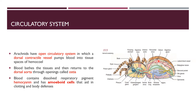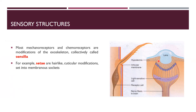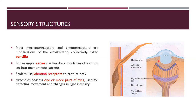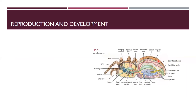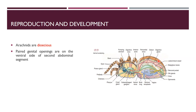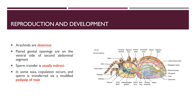Sensory structures in arachnids include chemoreceptors and mechanoreceptors, called sensilla collectively. There are setae — hair-like structures — and vibration receptors for capturing prey. One or more pairs of simple eyes are present for detecting light intensity. For reproduction, arachnids are dioecious with paired genital openings on the ventral side. Sperm transfer is indirect, and males have pedipalps modified for sperm transfer.